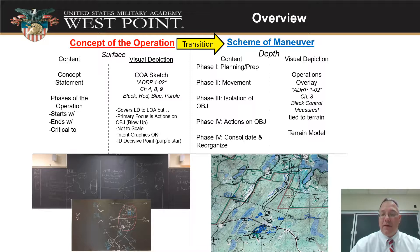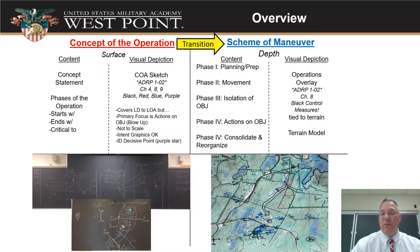Make sure you understand that on the operations overlay, all of our control measures — even though they're friendly control measures — go in black. So control measures get shown in black, our friendly units normally being in blue, enemy in red, but control measures are in black.